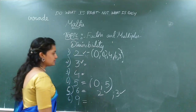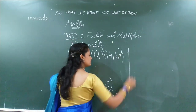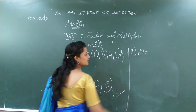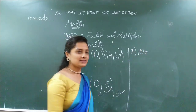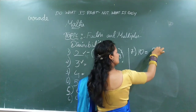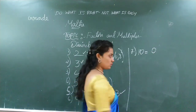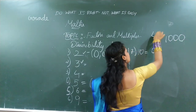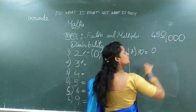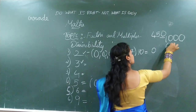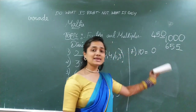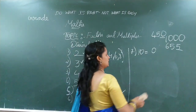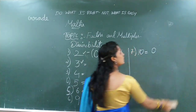Next, divisibility by 10. That is very, very easy. The units place must have 0. If the number has 0 in the units place, it is divisible by 10. If it has any digit other than 0, like 5, then it is not divisible by 10. The number must have 0 compulsory in the units place.